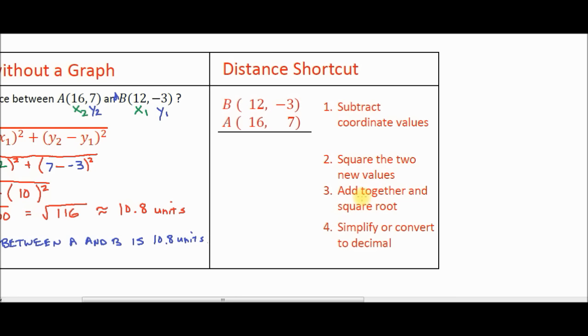And then step number four, you're going to simplify or convert your answer from step number three into a simplified radical or a decimal. So here's your steps. You can pause the video if you need to, to get those written down. Please don't continue the video until you do, because you want to pay attention to how I explain how to do this process. So step number one, let's change the color here. Step number one, subtract the coordinate values. So again, as I mentioned before, it doesn't matter whether you put